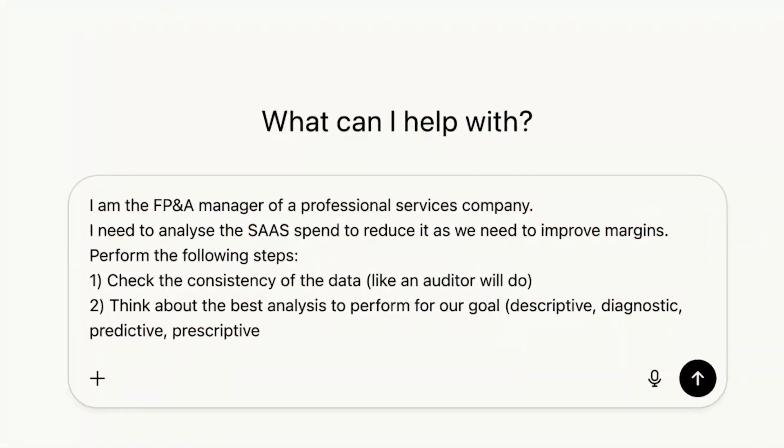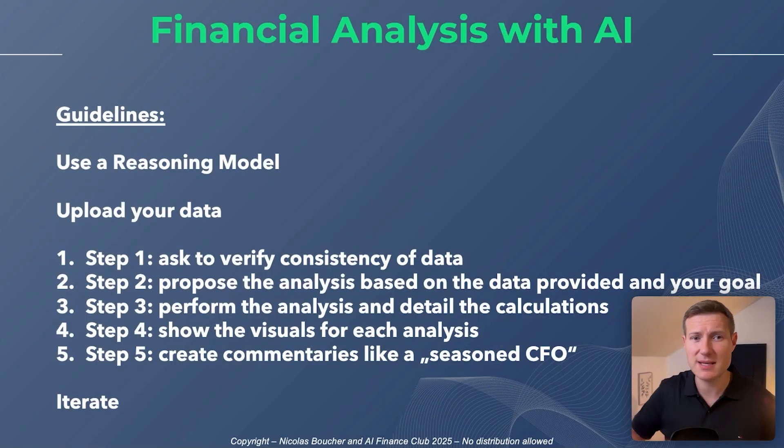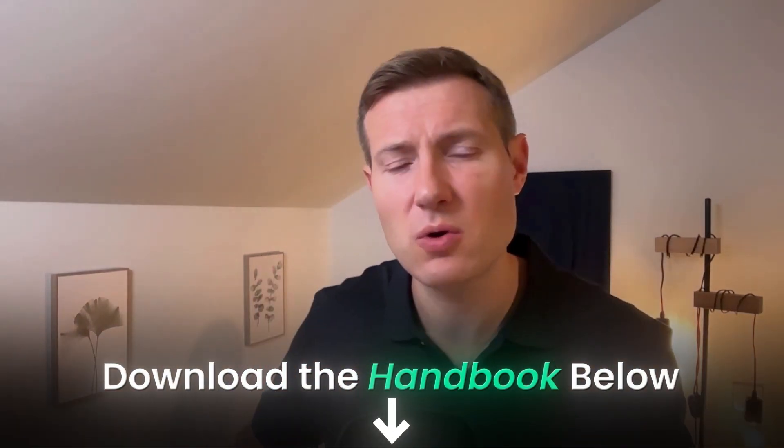So this is how we use AI to go from a simple problem — we want to reduce our SaaS spend — and when you use it the right way with the right model and the right prompt, you can do an ad hoc analysis. Of course, you need to review the calculations and make sure you understand them. But that was just one prompt and two and a half minutes of work from ChatGPT. Imagine how much more you can get in one hour working with AI as your assistant — how much money you can make your company save on software licenses and subscriptions.